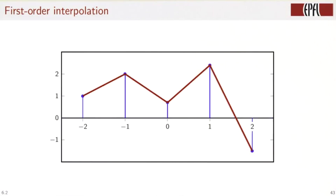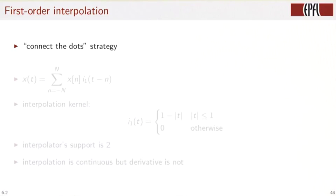The next simplest interpolation is first-order or piecewise linear. You simply draw a straight line between the samples.